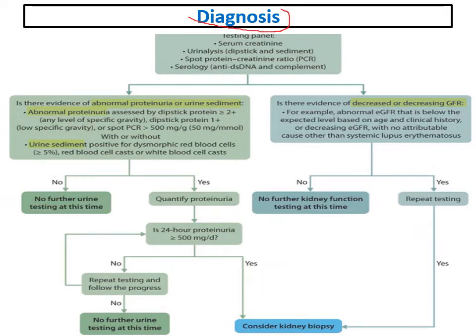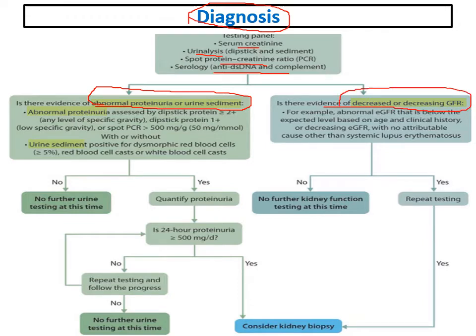From the KDIGO 2021 guidelines: when suspecting lupus nephritis, we should ask for serum creatinine, urine analysis to search for dipstick proteins and sediment, protein-creatinine ratio, and serology including anti-double-stranded DNA, C3, and C4. If there is evidence of abnormal proteinuria and urinary sediment — as defined by proteinuria and hematuria with impaired kidney function — we proceed accordingly.